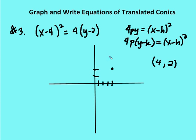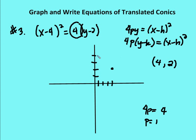Next I want to find my p-value, which is the distance from the vertex to the focus of the parabola. I have 4 times y minus 2, so I set 4p equal to 4 — the coefficient in front of the variable that does not have the squared value — and I get p equals 1.